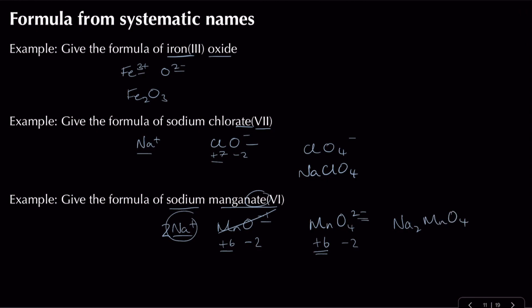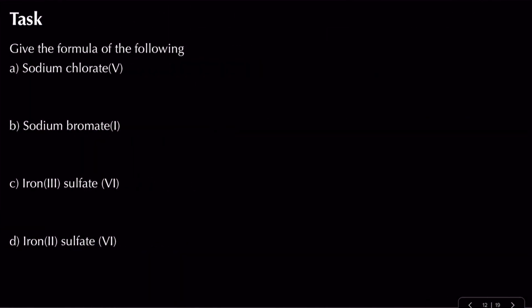Practice task — finding formulas. For sodium chlorate(V): sodium is plus, chlorine has an oxidation state of plus five, the chlorate ion must be minus one. To go from plus five to minus one requires minus six, so three oxygens (3 × −2 = −6). The formula is NaClO3.